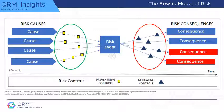Risk controls can and should be designed to prevent the risk event from occurring by eliminating the cause of that event or by reducing the chances or probability of that event occurring. However, once the specific risk event has occurred, only mitigating controls can lessen the severity of the consequences, and those consequences can be either to the patient or the business.